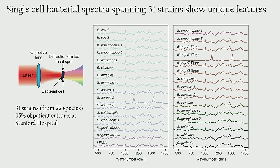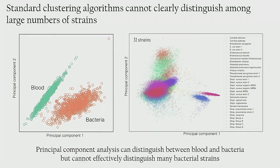We've looked at single-cell Raman spectra from 31 strains in 22 species, representing 95% of all patient samples at Stanford Hospital and the vast majority of all bacterial infections seen worldwide. Looking at these Raman spectra, you can tell differences between different types, including staph, pneumonia, and streptococcus. But when you do a principal component analysis, you can see that bacteria in blood cluster together — some are easily distinguishable, others are much more challenging to distinguish.